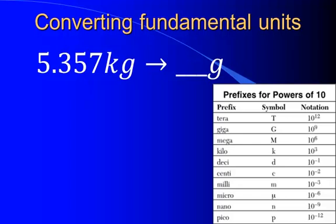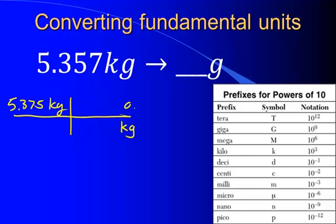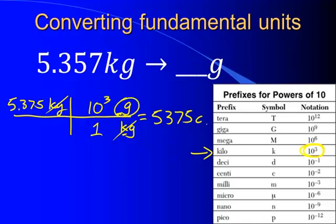Let's try another one: 5.375 kilograms, and we're going to convert it to grams. I have the unit kilograms and I want grams, so I need kilograms to go away. I'll draw kilograms in the denominator and grams in the numerator. To deal with this kilo prefix, I look on my table and find that kilo means 10 to the third. I write 10 to the third on the side that does not have a prefix — the gram side — and a 1 on the remaining side. What I'm really saying is 10 to the third grams equals 1 kilogram. When I multiply through, kilograms cancel out and I'm left with 5,375 grams.